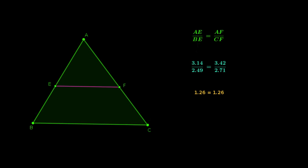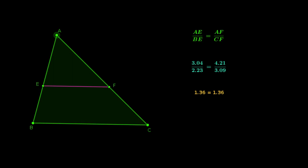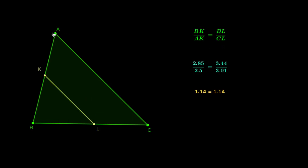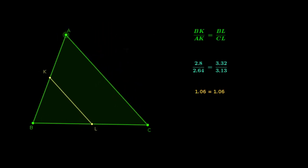Let us see this by drawing another parallel line for another side — here also the other two sides are proportional. Let's check by varying the length of the triangle. Even if we vary the length of the triangle, the ratios remain the same.